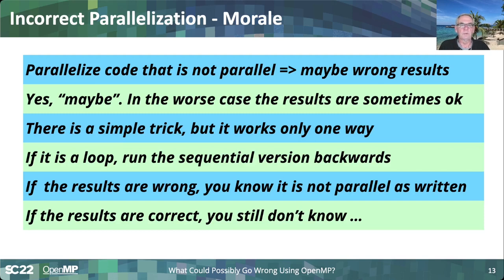The lesson learned: don't parallelize code that's not parallel. When you do, you may get wrong results sometimes — and as shown, some results in the same vector can be correct while others are wrong, making it a nightmare to debug. Here's a simple trick that works only one way but is highly effective: run the loop backwards, starting with the last iteration and ending with the first. If you get wrong results, you know there's a dependence on earlier computed results, and you can't parallelize it as written. Unfortunately, if you get the right results, you still don't know for certain.